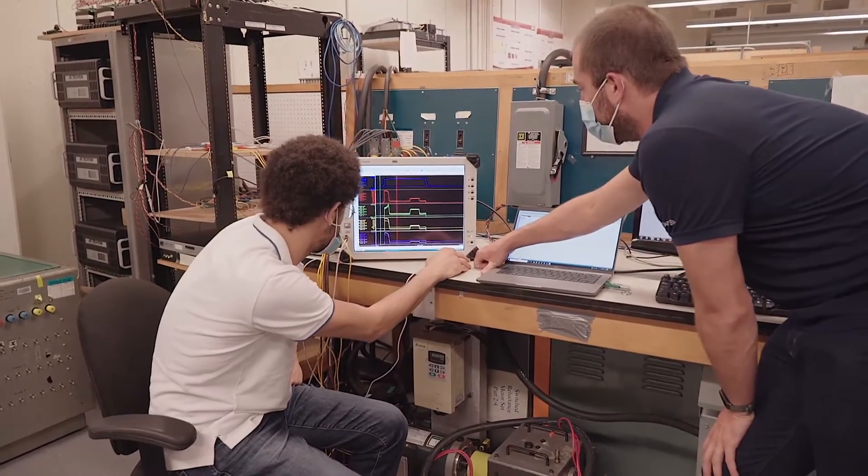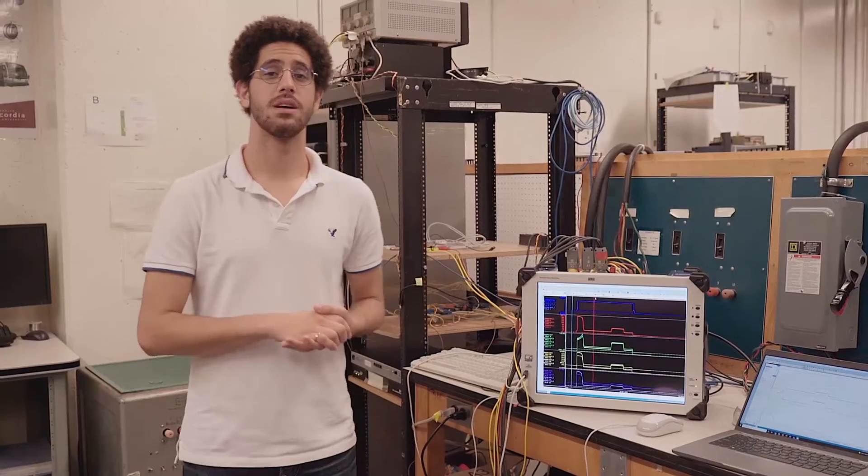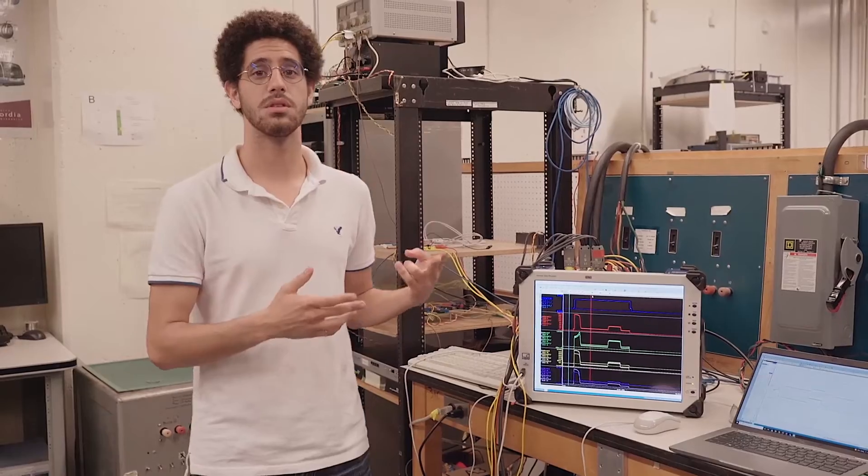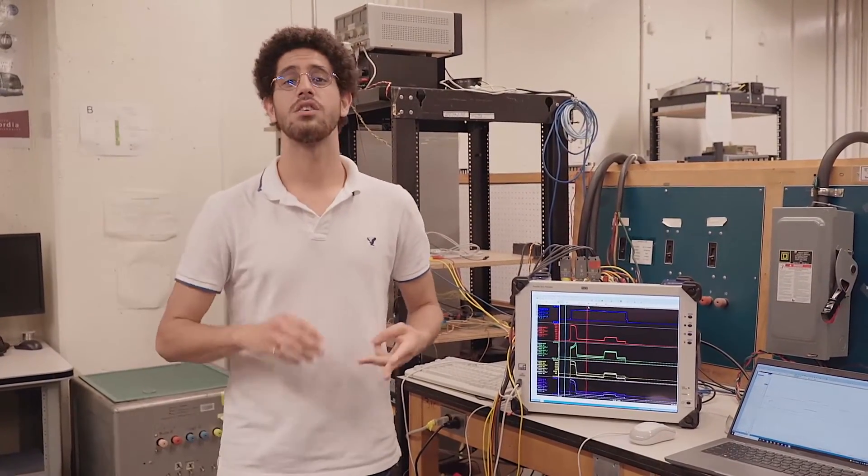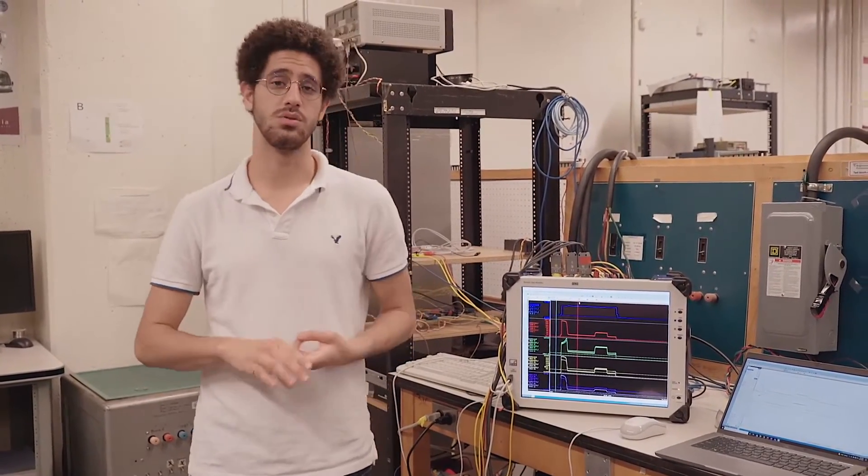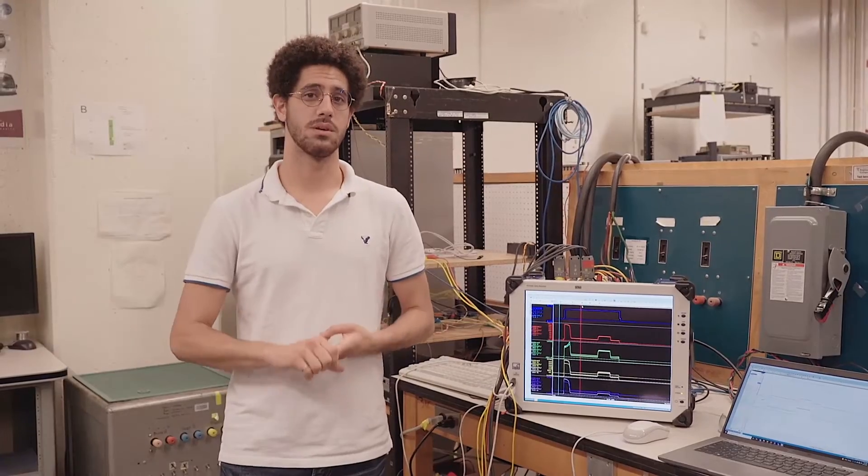So to conclude today's presentation, we understand the reluctance of moving away from real hardware validation for the verification of your device under tests and your motor controllers. Hopefully we were able to convince you that using a power hardware in the loop setup can help you speed up your time to market and reduce your testing costs as you're going to have a reliable model to work with while you're developing your controllers. It'll also help you increase the lifespan of your motors and your dynos as you'll be using them less and using them only when it matters.